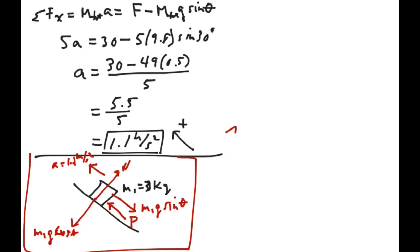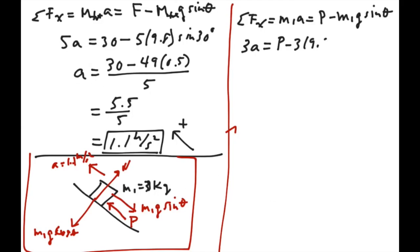And if I look in the x direction, positive x going up, I guess, in this case, I would have that the summation of all the forces in the x direction is equal to M1 A, and that is equal to P minus M1 g sine theta. Because that is the net force in the direction of positive acceleration. Since M1 is equal to 3 kilograms, we're going to have 3A is equal to P minus 3 times 9.8 times the sine of 30 degrees.